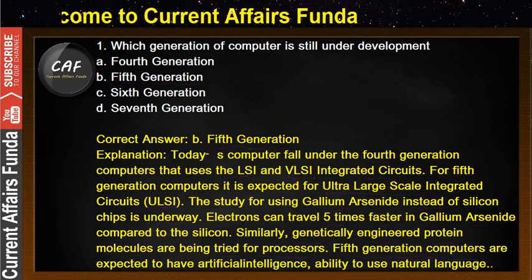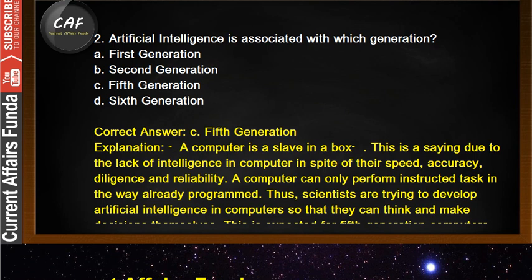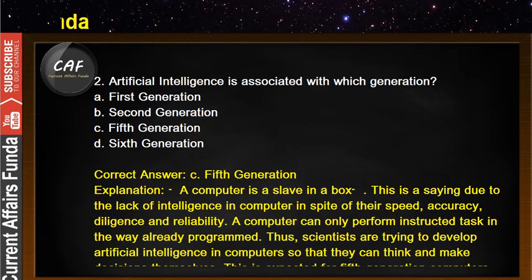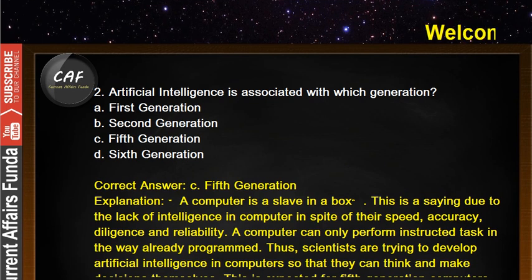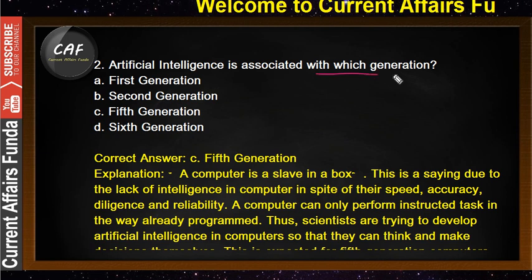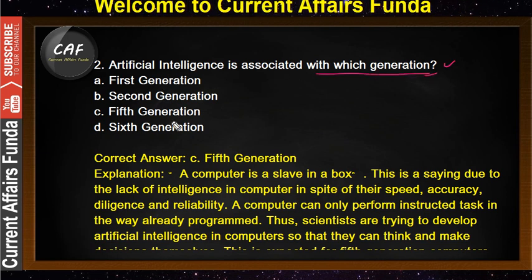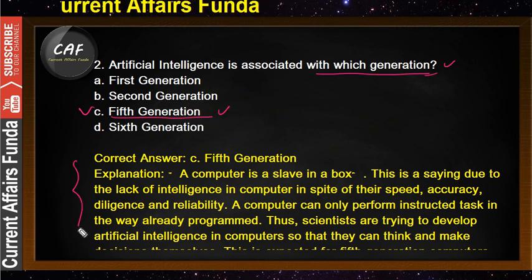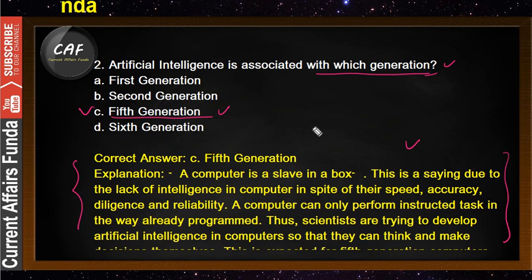Now let's move to problem number 2. Artificial intelligence is associated with which generation? The answer is the fifth generation. If you are strong in the theory portion, you can solve any MCQs.